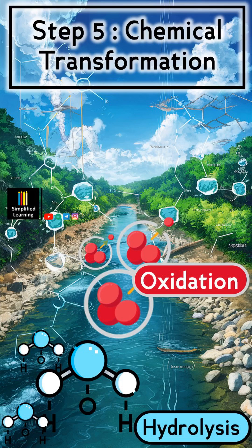The next step is chemical transformation. Chemical reactions in river water can transform pollutants into less harmful substances. For example, oxidation reactions can break down organic compounds, and hydrolysis can decompose chemicals. These transformations can neutralize toxic substances and make them more biodegradable or less harmful to aquatic life.